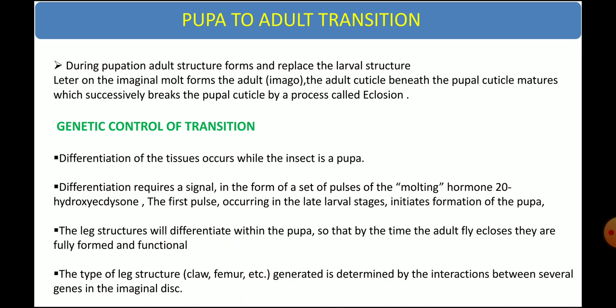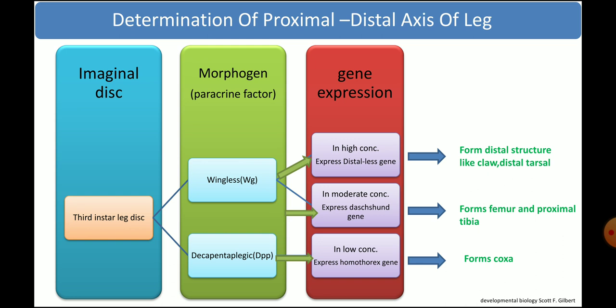Now let's look at the development and genetic control of the pupa-to-adult transition. Here the imaginal discs form the adult (imago) from the pupa. The differentiation of imaginal tissue occurs while the insect is in the pupal stage, and this differentiation requires a pulse of molting hormone, that is 20-hydroxyecdysone. The type of structure the imaginal disc cell will form is determined by the interaction between several genes in an imaginal disc cluster.